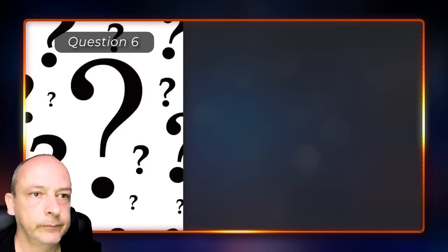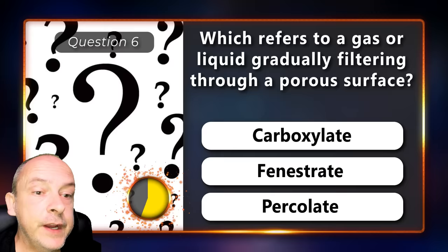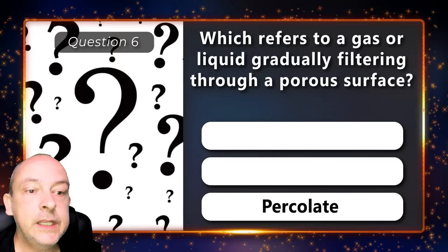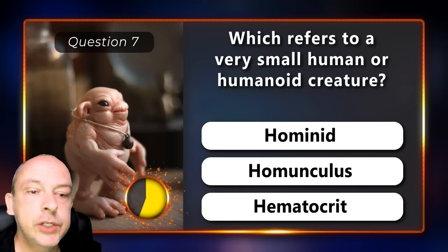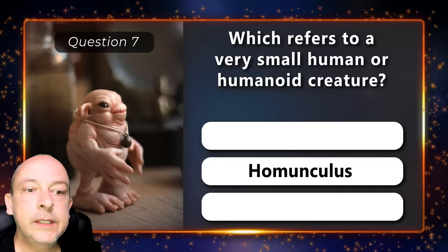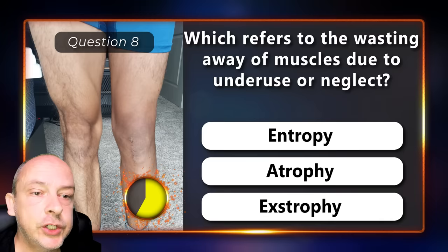Which refers to a gas or liquid gradually filtering through a porous surface? Carboxylate, fenestrate, or percolate? It is percolate. Which refers to a very small human or humanoid creature? Hominid, homunculus, or hematocrit? It is homunculus.